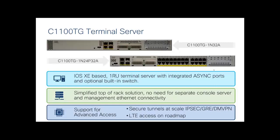The second variant — the C1100TG — combines what previously required two separate devices: a terminal server for async console connectivity and a dedicated switch for management Ethernet. This integrated solution reduces one device from your top-of-rack setup. It supports secure tunnel connectivity via IPsec, GRE, and DMVPN, and also supports LTE connectivity — you can insert a 4G or 5G SIM card via an LTE NIM module for primary or backup uplink.